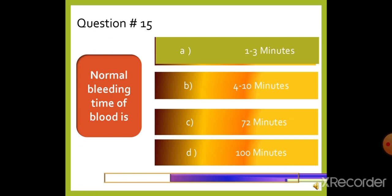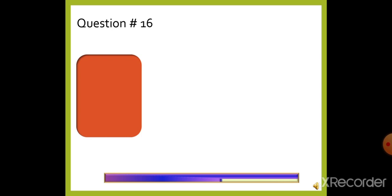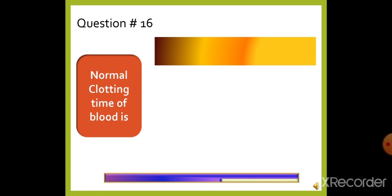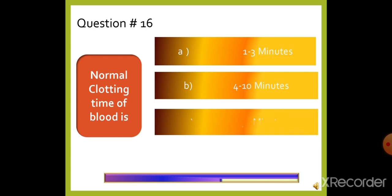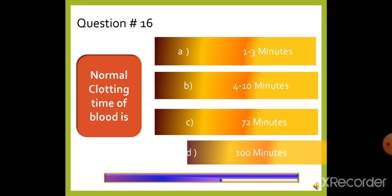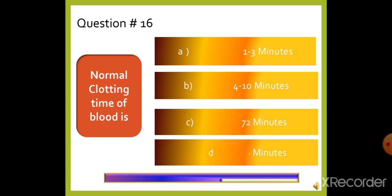Question 16: Normal clotting time of blood is — option A: 1 to 3 minutes, option B: 4 to 10 minutes, option C: 72 minutes, or option D: 100 minutes. The right answer is option B, 4 to 10 minutes.